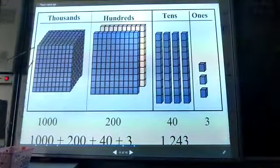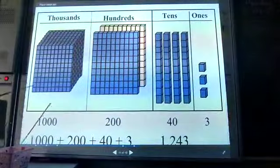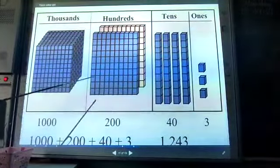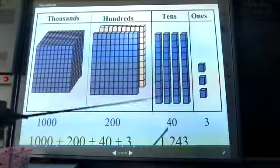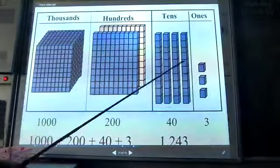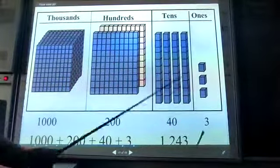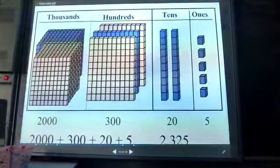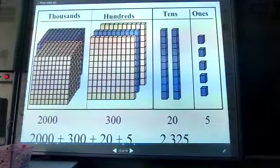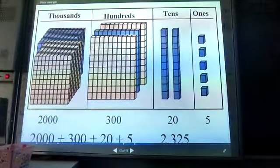This is 1,000, these are 200, these are 40, and 3. So the number will be 1,243. Same here: 2,325.